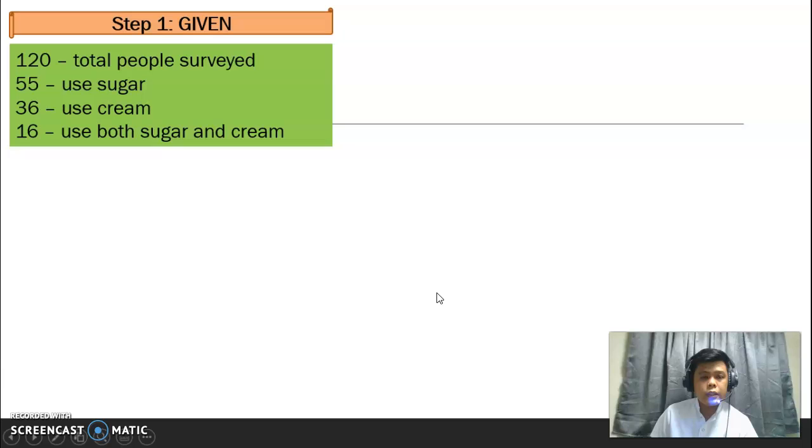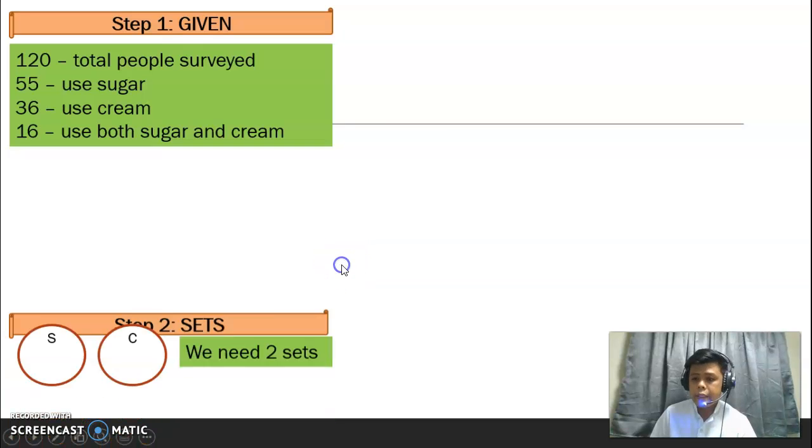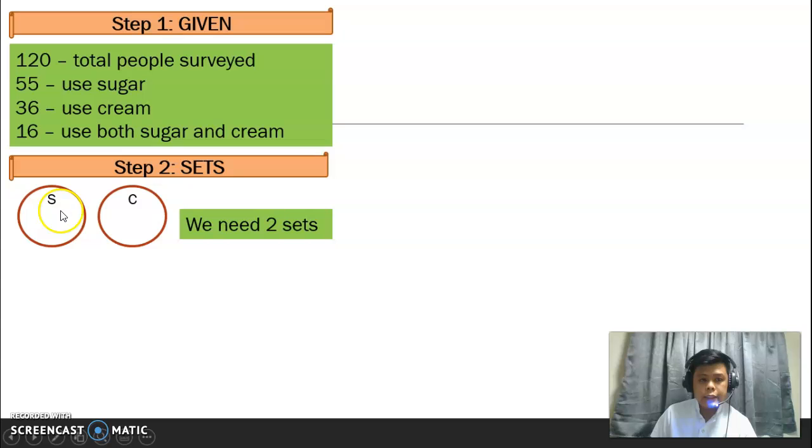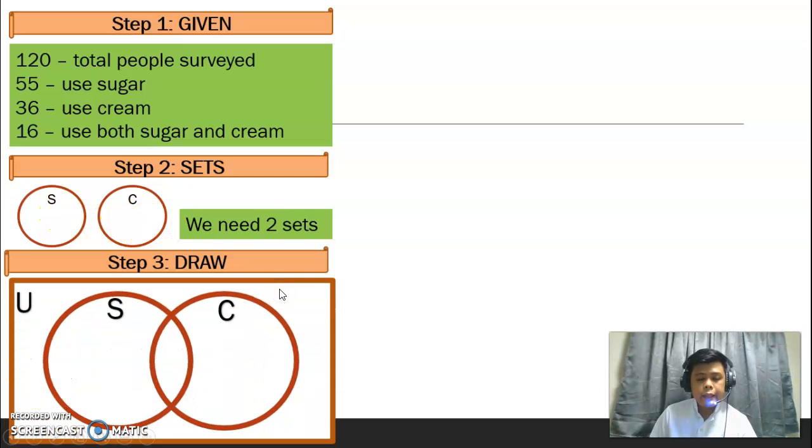Here are the answers. Step 1, given. Meron tayong 120 people na tinanong. 55 used sugar, 36 used cream, 16 used both sugar and cream. Step 2, ilang sets ang kailangan? Dalawa. Isa para sa set S, isa para kay set C. And then, i-drawing natin. 16 nasa gitna kasi gumagamit sila parehas ng sugar at cream. 39 yung sa may sugar na lang. Baka, saan ako yung 39? 55 yan, minus 16, kasi yung 16 nakalista na. And then, para naman sa set C, magiging 20 na lang siya sa cream. 36 minus 16, 20. And then, 45 na naman yung nasa labas. Kapag binilang mo yan, 120. 36 plus 16 plus 20, then yung sagot doon, i-minus mo sa 120, kaya 45 ang nasa labas.